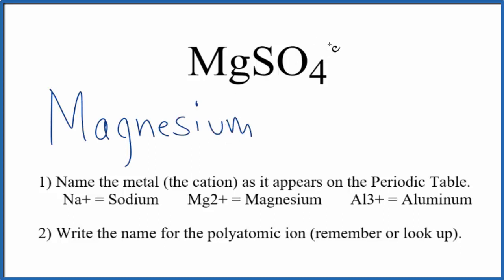Next, we write the name for the polyatomic ion, the sulfate ion, lowercase s. So the name for MgSO4 is magnesium sulfate.